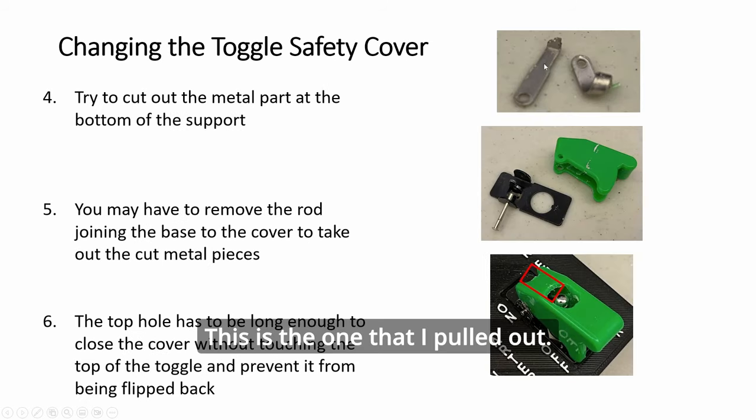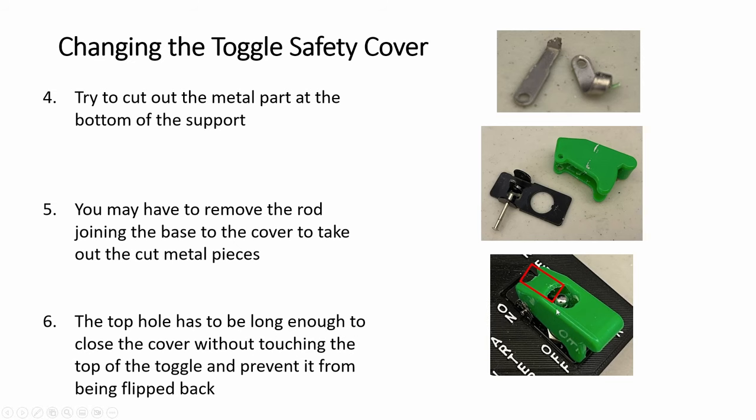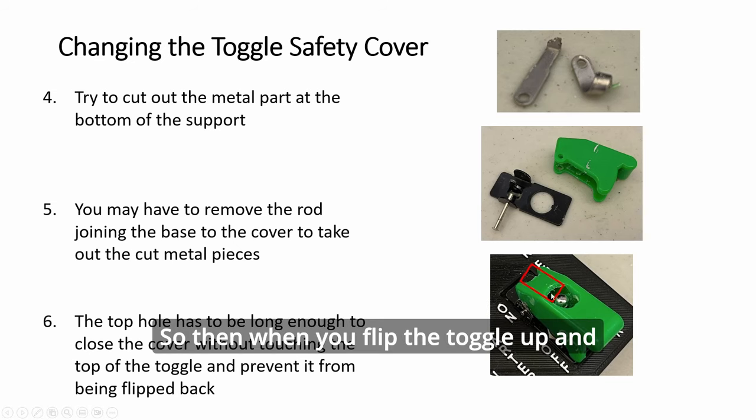Okay, this is the one that I pulled out. You might even have to disassemble this part here to pull out everything and then put this back in here and close it with this piece of rod. Okay, so then when you flip the toggle up and you close it, it stays here without the top pushing it back down. And you have to do this for both toggle guard. Alright, it's a bit tedious, but it's doable.